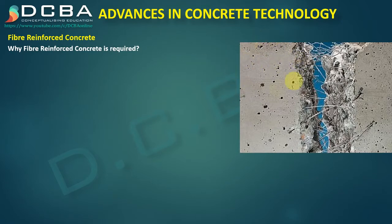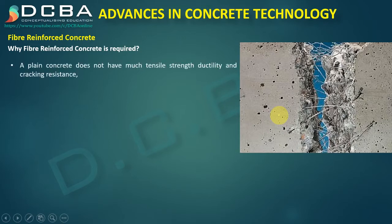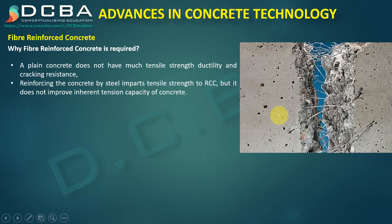You can already see in this image that there are some fibers embedded into the concrete. Plain concrete does not have much tensile strength, ductility, or crack resistance. We all know that plain concrete is very weak in tension, and for that we supplement it with reinforcement or steel. However, reinforcing concrete with steel imparts tensile strength to RCC but does not improve the inherent tension capacity of the concrete itself.